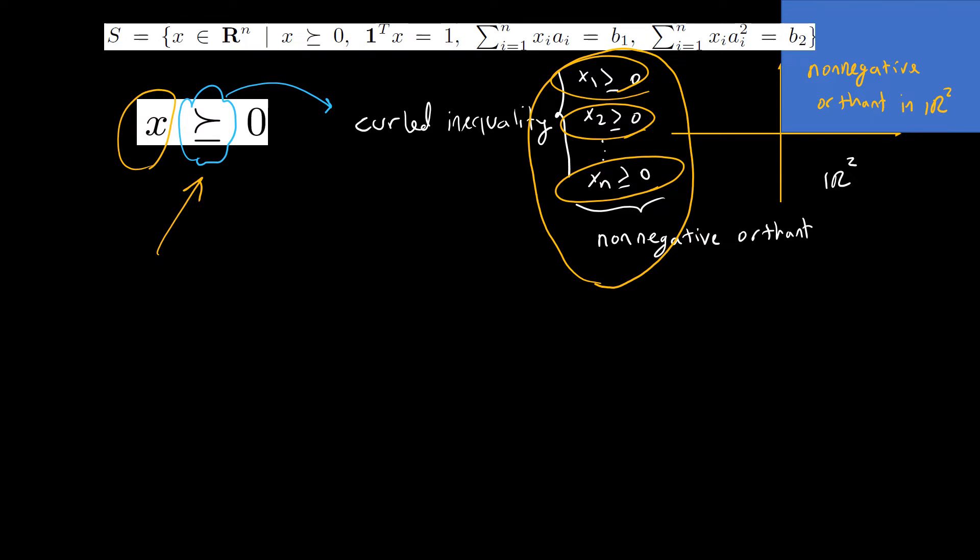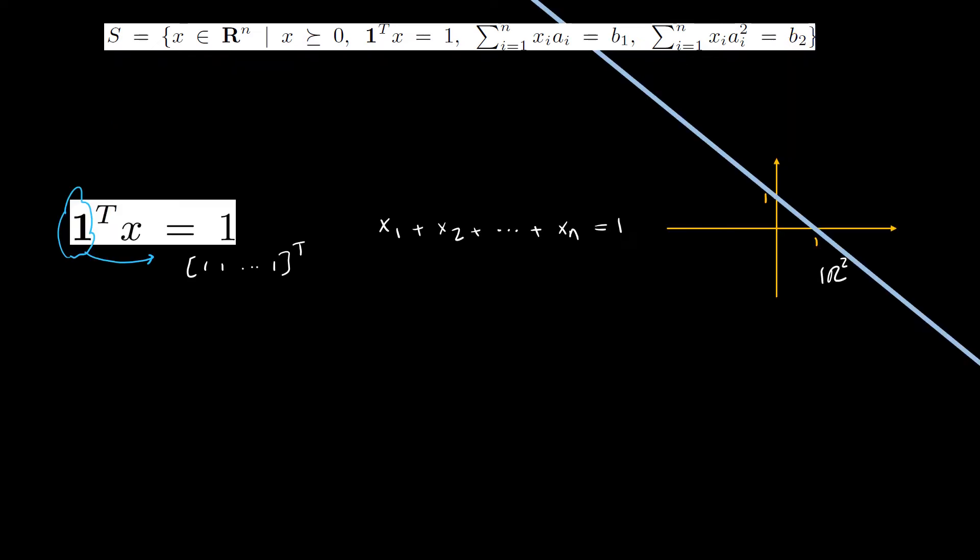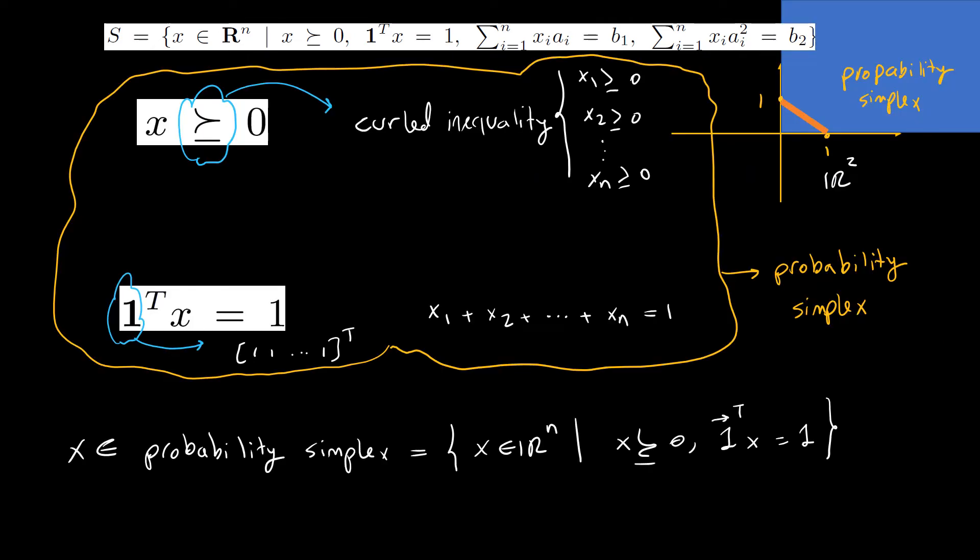For the second constraint, notice that this is a vector in R^n whose components are all one. Therefore, we have this equality. In R^2, it is a line passing zero one here and one zero here. If we put the first two constraints together, we get a special set that is called probability simplex. In R^2, it is a line segment starting from zero one and ending at one zero.